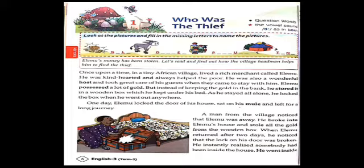Before we begin with this story, let us complete the pre-activity given in the lesson. Look at the pictures and fill in the missing letters to name the pictures. There are four pictures given in this lesson. Look at those pictures and fill in the missing letters and name those pictures correctly.